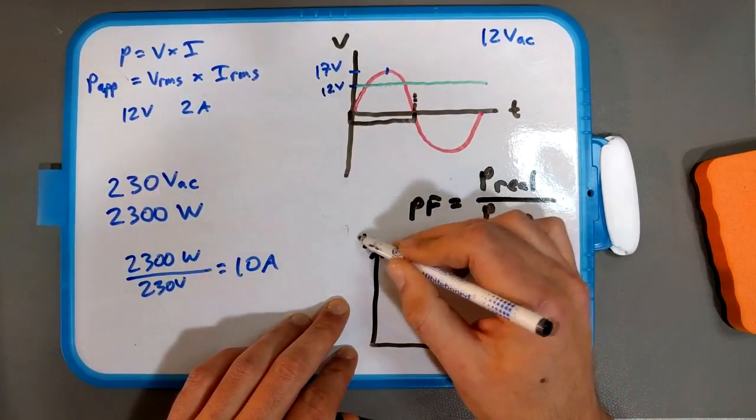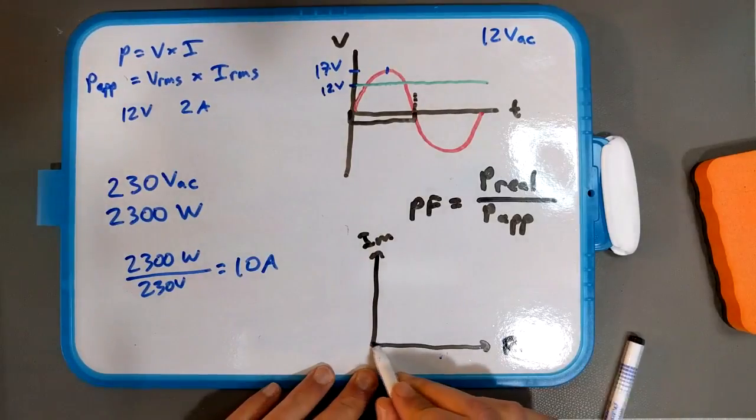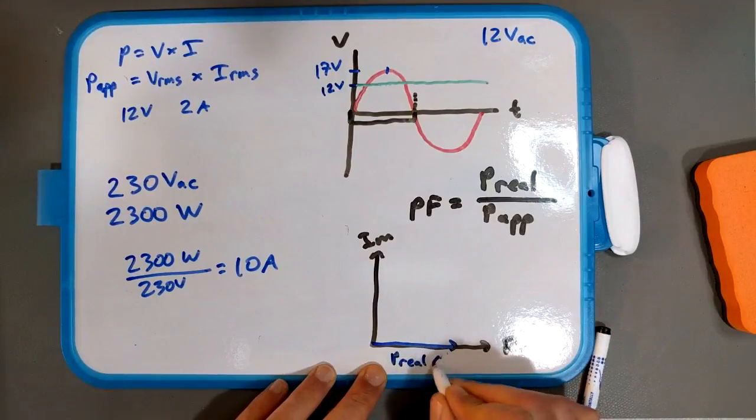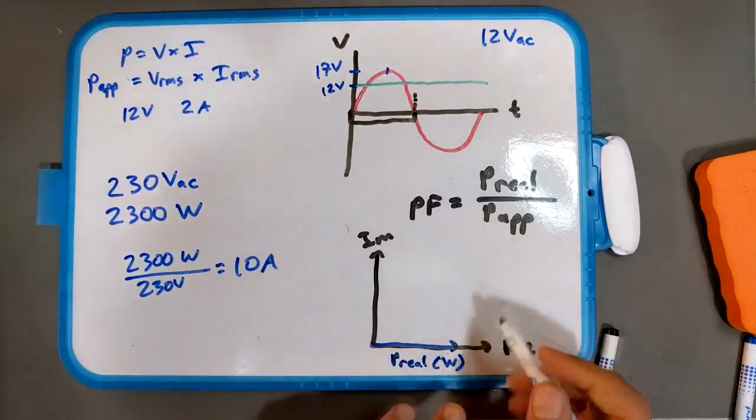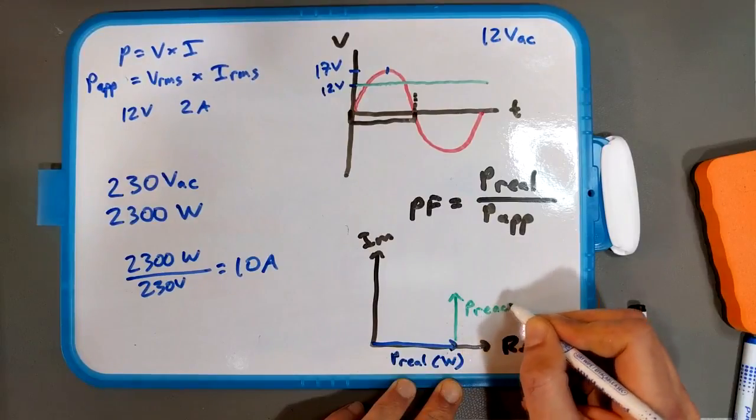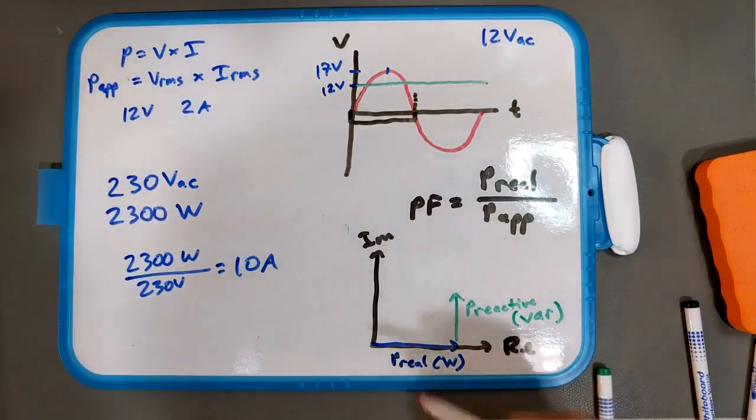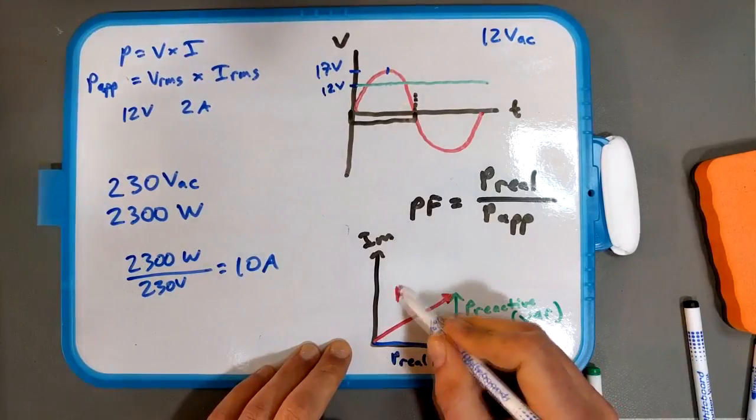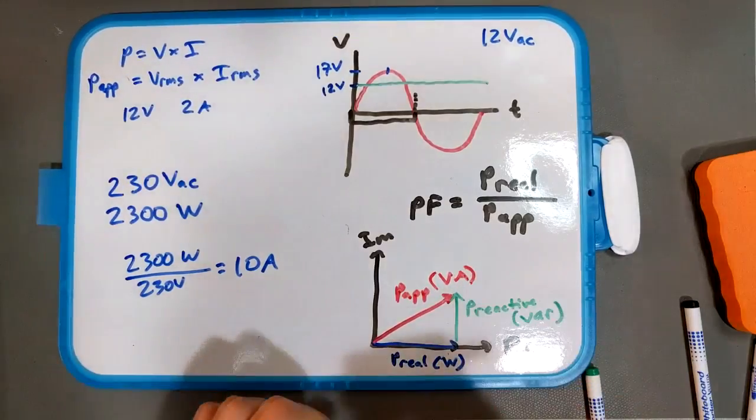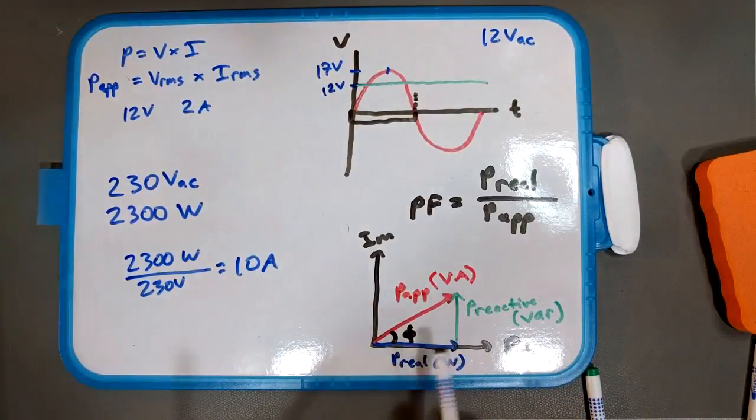Where this is sort of like imaginary power and this is real power. And the way that it works is here you have a blue arrow. This is real power given in watts. And this is reactive power given in VAR. And this is apparent power given in VA. And of course there's an angle phi here, blah, blah, blah. This is basically like a little vector diagram.